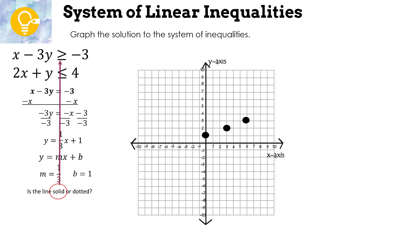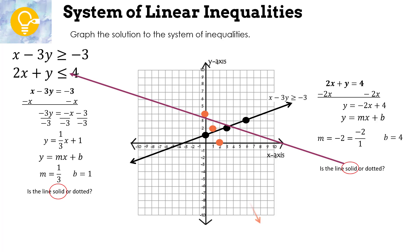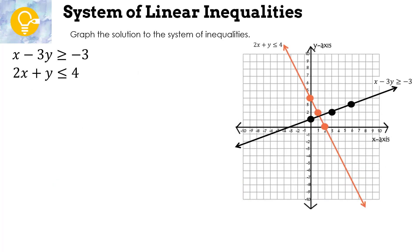For the second inequality 2x + y ≤ 4: solve for y by subtracting 2x — giving y = −2x + 4. Slope = −2 (written as −2/1), y-intercept = 4. Graph dot at 4, go down 2 over 1, down 2 over 1. This is also a solid line because of 'less than or equal to.'